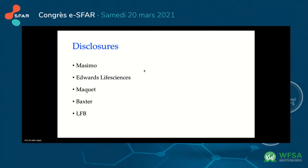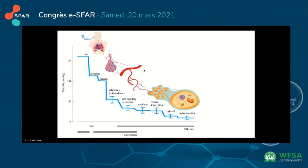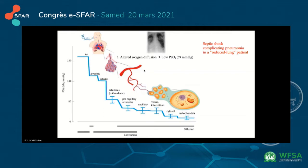I have some conflicts of interest to disclose. Going back to the oxygen cascade and back to our patient, he's in septic shock complicating pneumonia in a reduced lung patient. The consequences of this septic shock is altered oxygen diffusion.